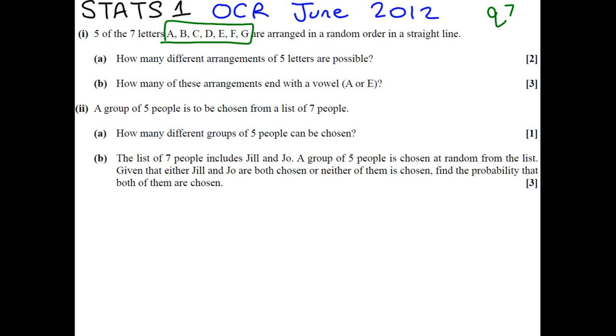How many different arrangements of the 5 letters are possible? Well, order matters because we're lining them up. So, it's going to be 7 to choose from, and we're choosing 5, and because order matters, we do 7P5. That gives us 2,520 as our answer.